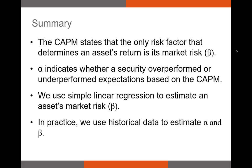To summarize: the CAPM states that one risk factor — the market risk factor, beta — determines an asset's expected return. Alpha indicates whether a security outperformed or underperformed based on its beta: positive alpha means outperformance, negative alpha means underperformance. We use simple linear regression on historical data to estimate an asset's beta and alpha. If you have any questions, please feel free to reach out. Thank you.